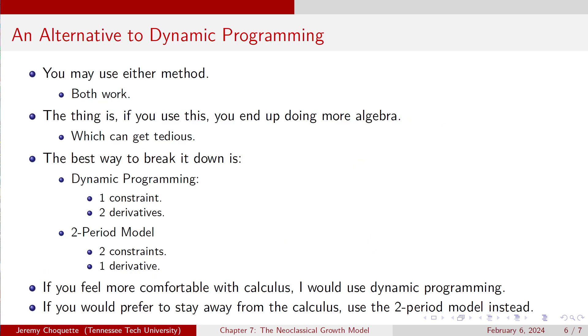So you can use either method, right? Because both of them work. The thing is, if you use this, you're going to end up doing more algebra, and it can get a little tedious. Because you've got two constraints instead of just one. So if you're comfortable playing around with a lot of constraints, this is going to be the way to go for you. If you're like, ah, I don't know, it can get a little tedious, it's going to get a little ugly, maybe I want to take my chances with the calculus, dynamic programming would be the way for you. Because with dynamic programming, you have one constraint and two derivatives. For the two-period model, you've got two constraints and one derivative. And either one works. Whichever one you feel more comfortable with, use it.